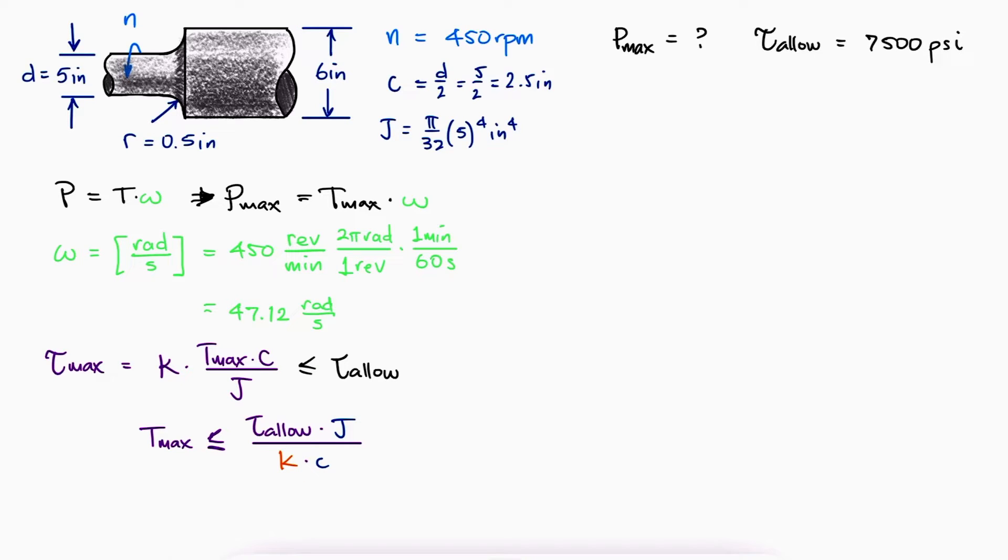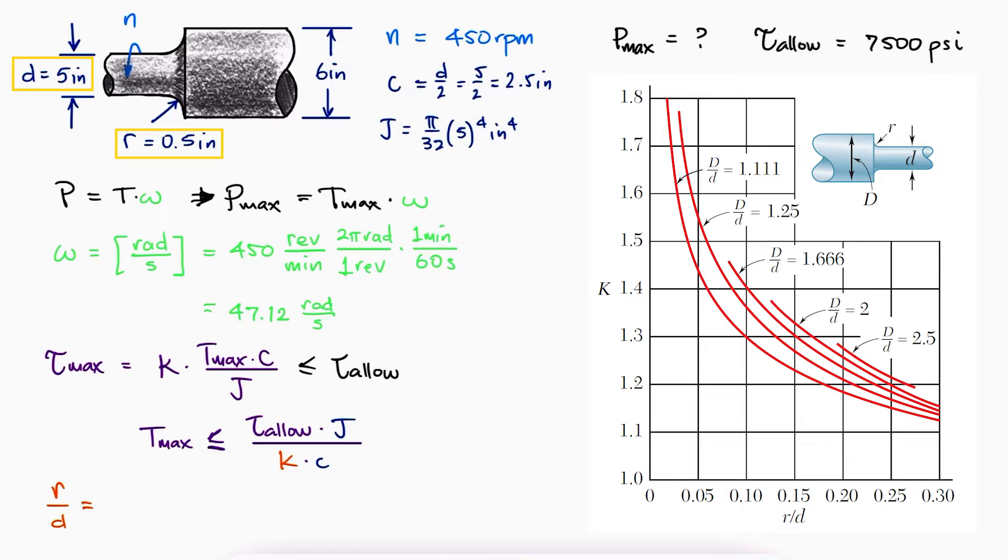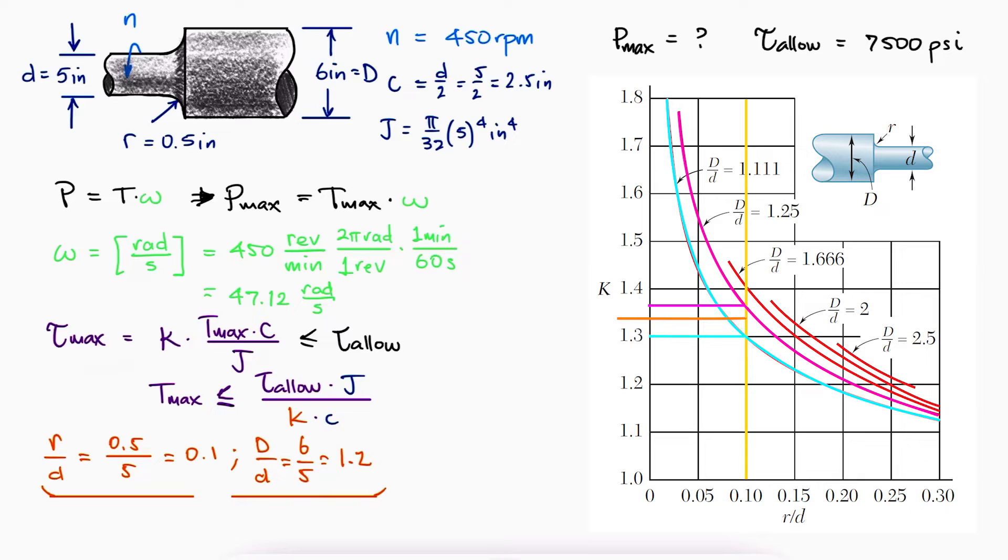To find that stress concentration factor, we need the r over d ratio for the x axis and the capital D over lowercase d ratio to identify the plot we're using. The plot will be that roughly two-thirds of the way from 1.11 to 1.25. This corresponds to a k value of about 1.33.